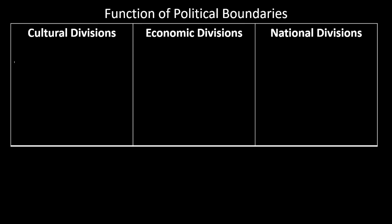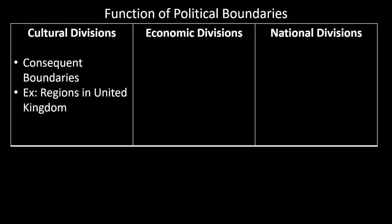Political boundaries can serve as cultural divisions, ethnic divisions, and national divisions. They can serve to divide cultures, different types of development and wealth, or nations. We see this a lot on our modern political map. Cultural divisions — an example could be our consequent boundaries, which are created for cultural reasons. The breakup of Yugoslavia created many nation states, and their boundaries coincided to where the cultures were, where the nations were.